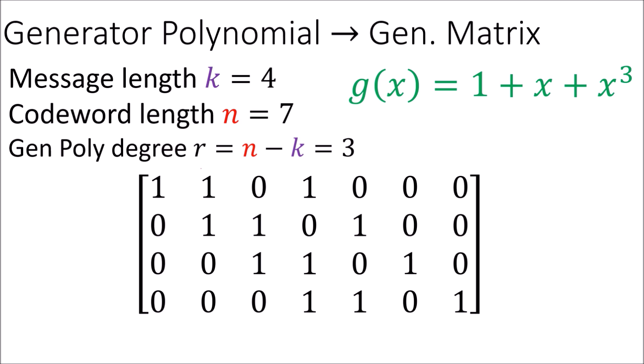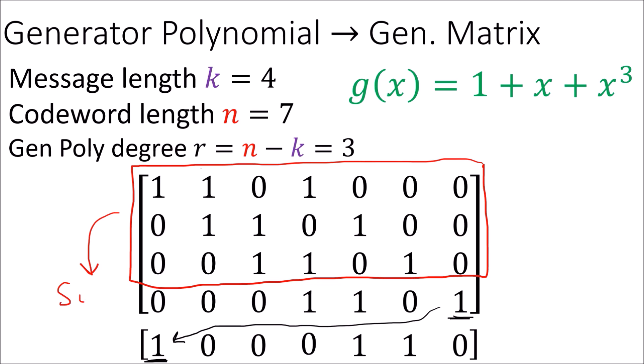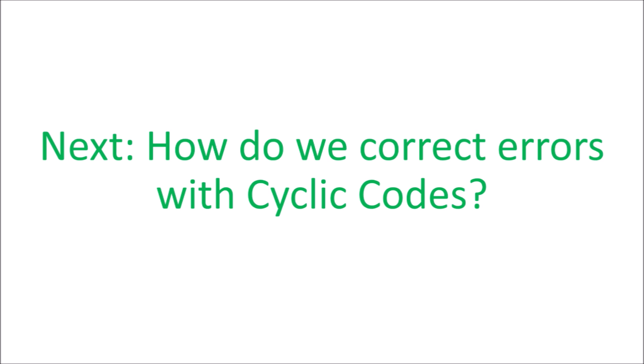You might wonder how we get cyclic shifts where a 1 wraps around — it turns out that adding the top three rows together creates that valid codeword. So the four rows generate the entire valid codeword space through linear combinations. Being able to generate valid codewords using the generator polynomial or matrix is great, but more importantly, how do we correct errors? That error correction process for cyclic codes will be covered next.